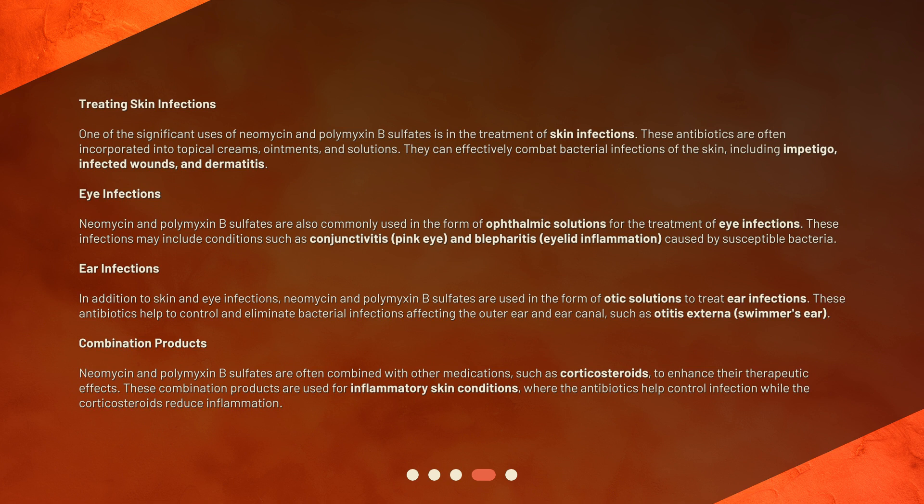Ear infections: In addition to skin and eye infections, neomycin and polymyxin B sulfates are used in the form of otic solutions to treat ear infections. These antibiotics help to control and eliminate bacterial infections affecting the outer ear and ear canal, such as otitis externa, also known as swimmer's ear.